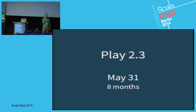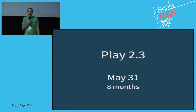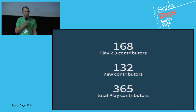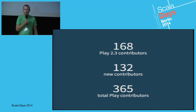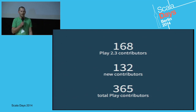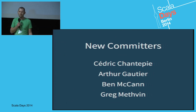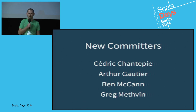Play 2.3 was released recently on May 31st, after about eight months since Play 2.2. There have been a lot of contributions from the community — 168 people contributing to Play 2.3, 132 of those were new contributors. So we've got a really active and very awesome community. There are just four of us within TypeSafe, but a lot of the work is being done from the committers. We've had four new committers during this time: Cedric, Arthur, Ben and Greg. It's really good to have you working on stuff.